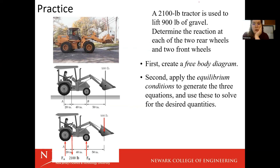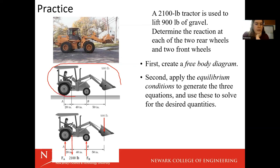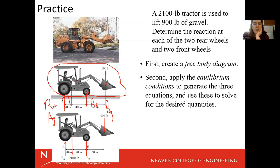Here's another example. A 2,100 pound tractor is used to lift 900 pounds of gravel; determine the reaction at each of the two rear wheels and the two front wheels. First create a free body diagram and then apply the equilibrium equations. Here's our spatial diagram. Our boundaries are right around here, so we're making breaks between the wheels and the ground — because they're wheels, they're still able to roll left and right, but we're not able to go through the ground. We're going to have R_B at the back and R_A at the front — both wheels would have vertical forces applied there.